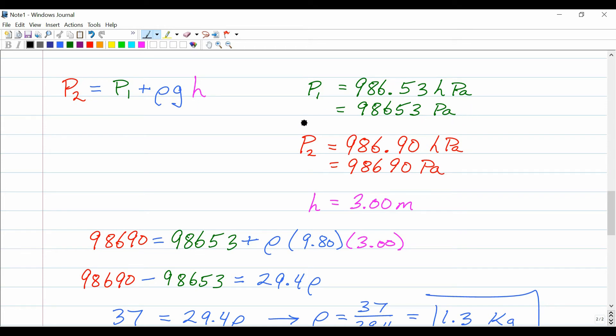Same thing for pressure two, 986.90 hectopascals, or just 98690 pascals. And of course, notice that the pressure at point 2 is higher, as expected. I actually measured the height between those two points and it was almost exactly 3 meters from ceiling to floor. That's not really rounded off in any dramatic way. It really was very close to 3 meters as far as I could measure it.